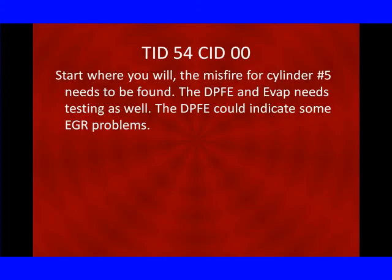So TID 54 — the misfire for cylinder number 5 needs to be found; that's a fact. The DPFE and EVAP need testing as well. We're only going to spend enough time on those, if the customer doesn't authorize repair, to make sure there's no EGR problem that could be causing misfires — then leave it in the customer's hands.